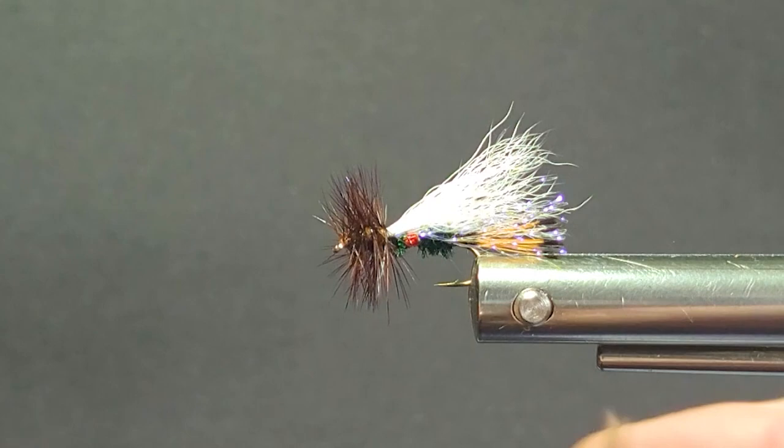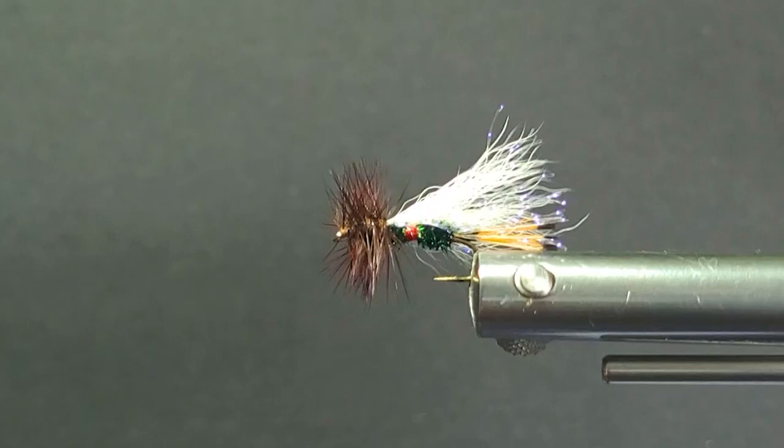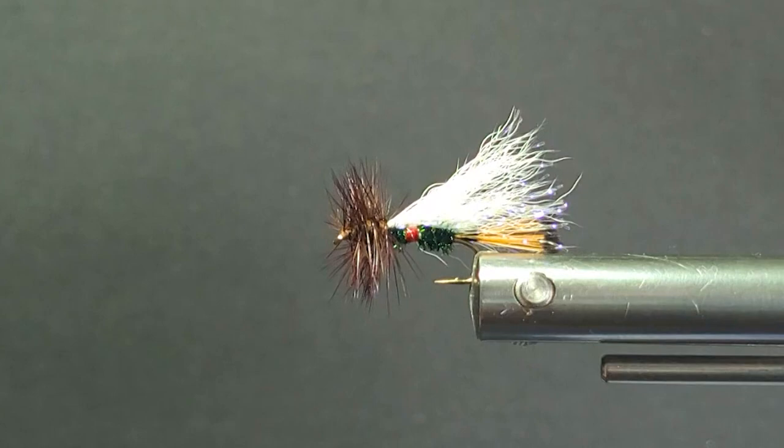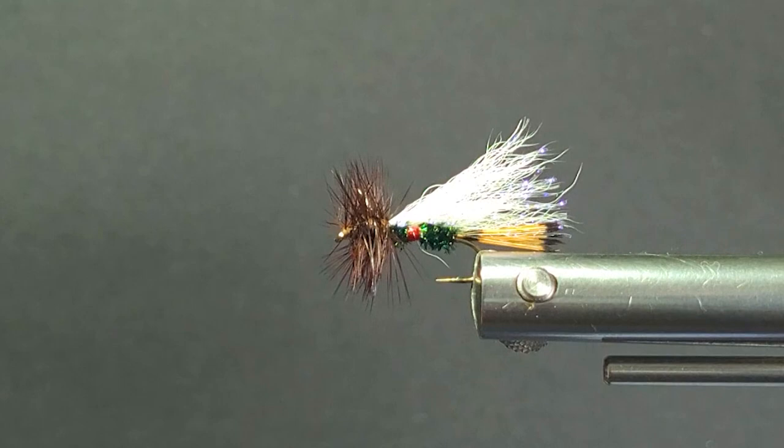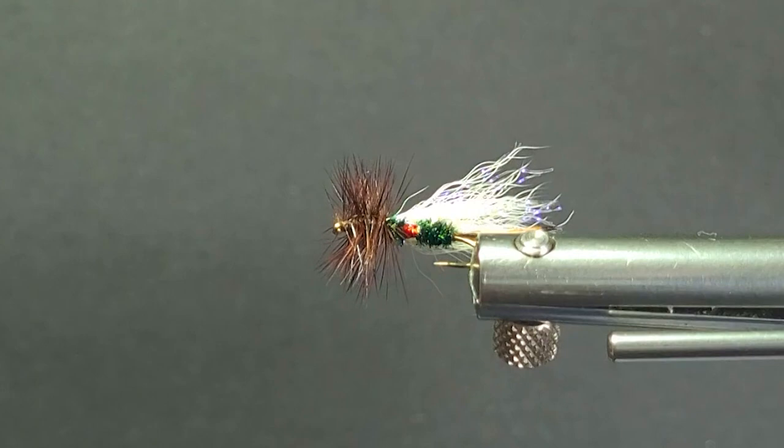So there it is. That's a Royal Trude. A little tricked out with a UV underneath there. And a great fly. You're going to have fun tying this one. It looks pretty. And you can also catch a lot of fish with this one. Just about any species of trout would be happy to eat that.